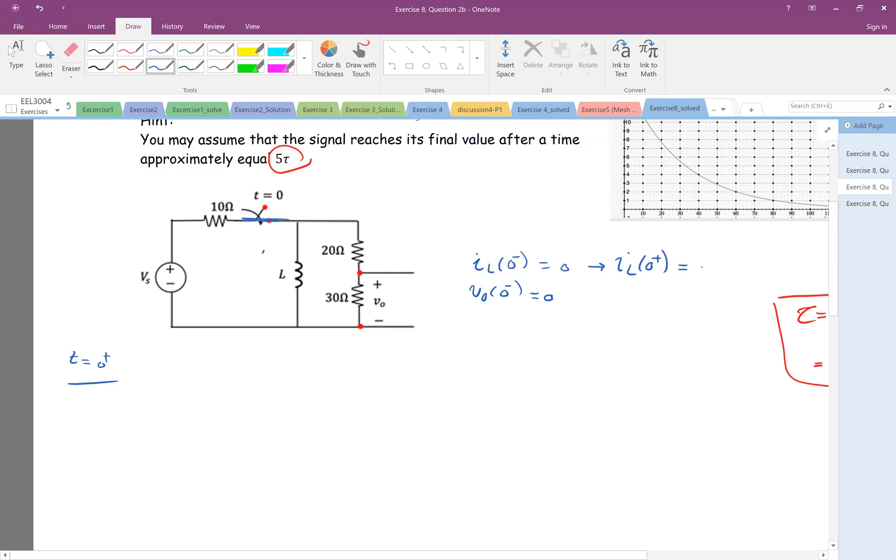Always the current carries on the inductor at one instant because it cannot change suddenly. So at zero plus, the current here is zero. Therefore, if the current here is zero, there's no current coming down. So we have this circuit.